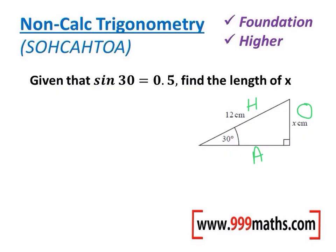The two sides that are important to this question are the hypotenuse, because that's the one we know, and the opposite, that's the one we're trying to find out. The adjacent we don't need to use.